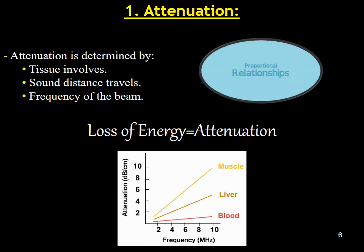The amount of attenuation that occurs in an ultrasound wave is determined by three factors: the type of tissue involved, the distance traveled by the ultrasound wave, and the frequency of the beam. Please keep in mind that the amount of attenuation in an ultrasound wave is directly proportional to these three factors.